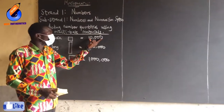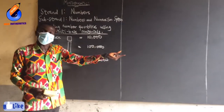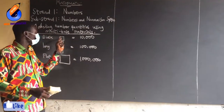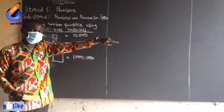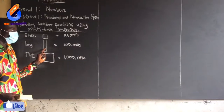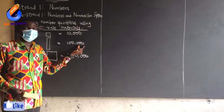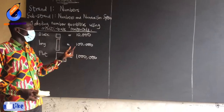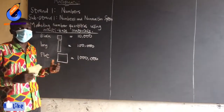So if one block is giving me 10,000, then three blocks — three of these — is going to give me 30,000. If one long is giving me 100,000, then four of these would give me 400,000. That is the modeling.